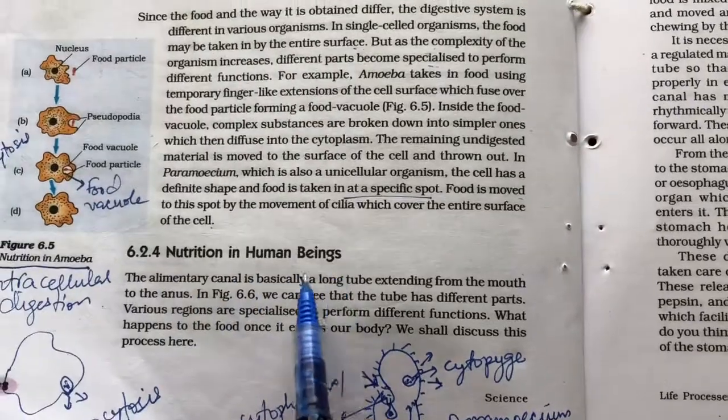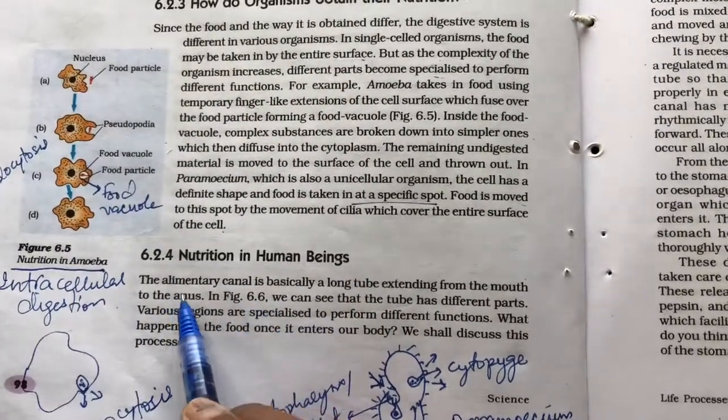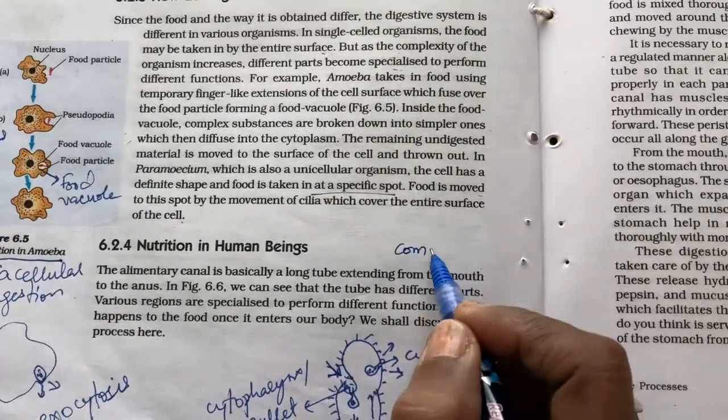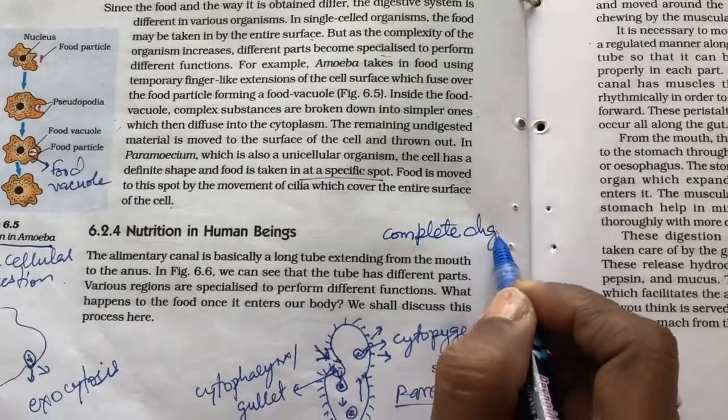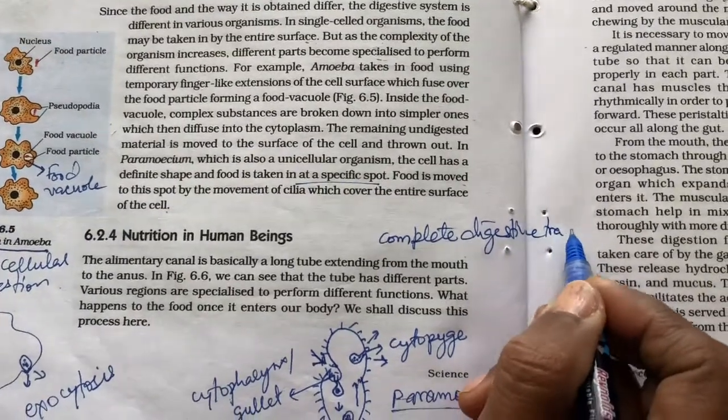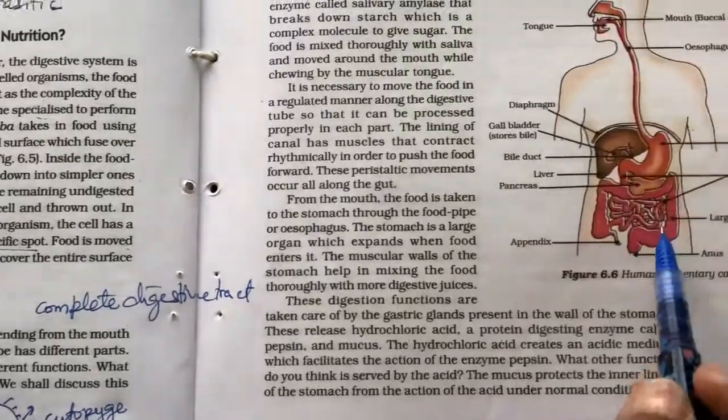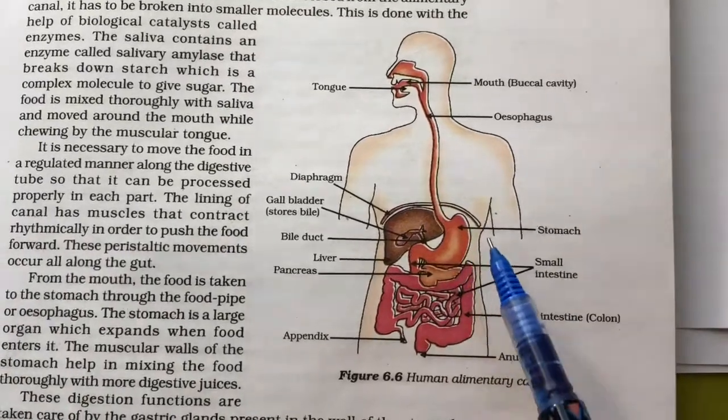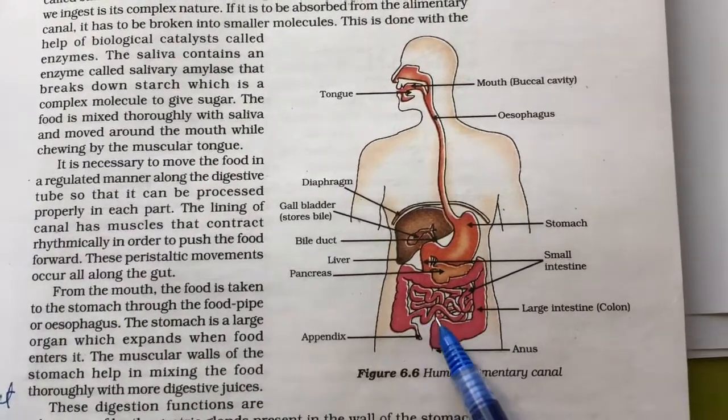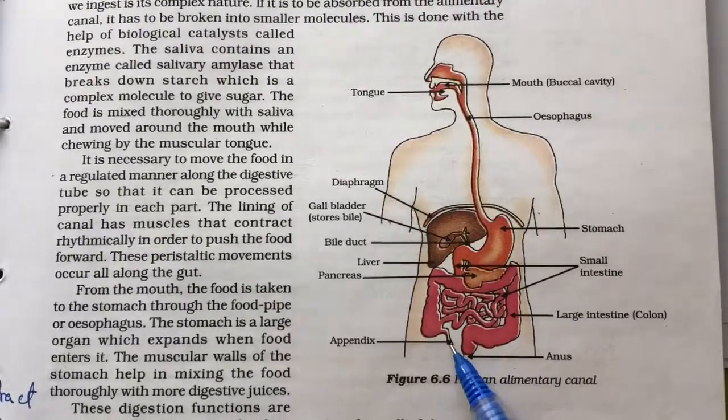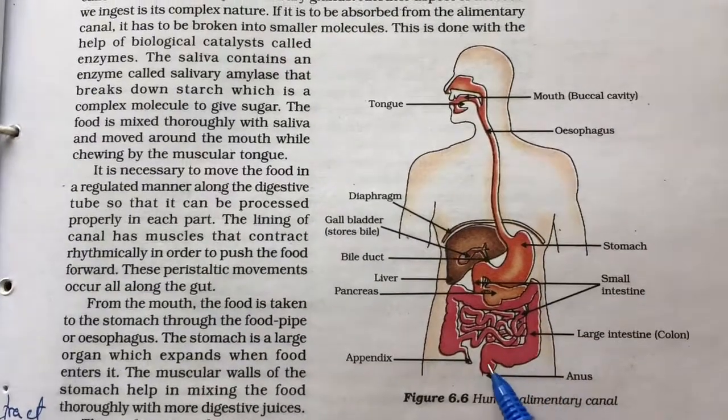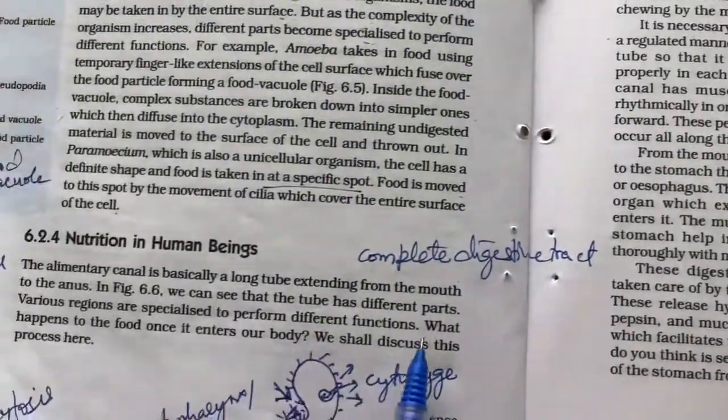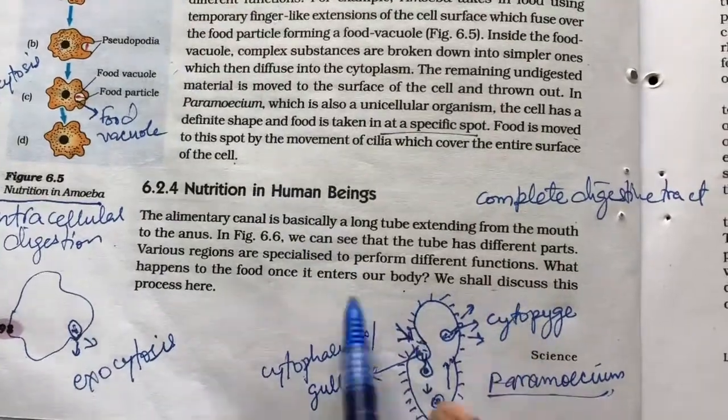Let us see how it happens in human beings, nutrition in human beings. We have an alimentary canal and this alimentary canal is basically a long tube extending from the mouth to the anus, we call it as a complete mouth tract, complete digestive tract. We can see that the tube has different parts. Look into this diagram, the tube has different parts, starting from the mouth, esophagus, then there is a stomach, small intestine, this one and then there is a large intestine which fuses with a small at the point called cecum, this is a large intestine. And finally, the undigested food is thrown out via the anus. What happens to the food once it enters the body? We shall discuss this process here.